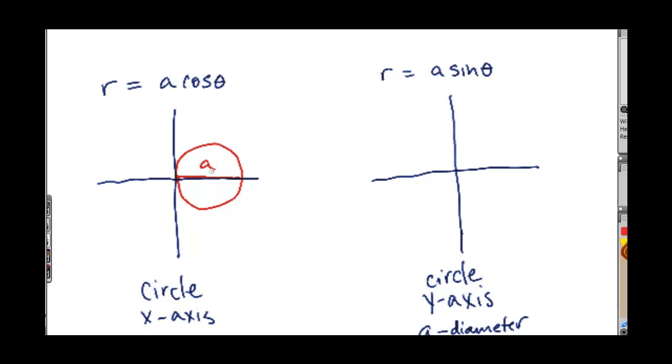If it's negative, if a is less than zero, this is for a greater than zero. If a is less than zero, it's in this direction. That's a rough looking circle. It's still going to be a.